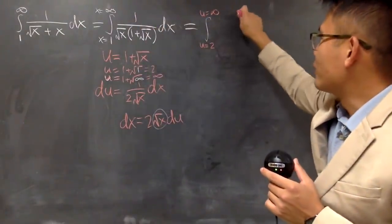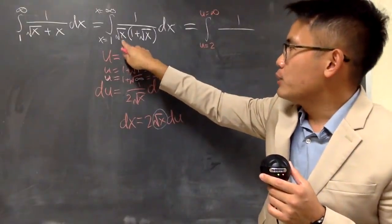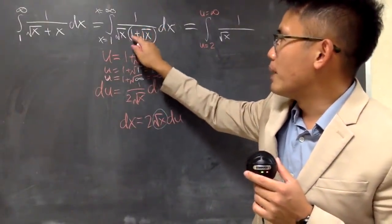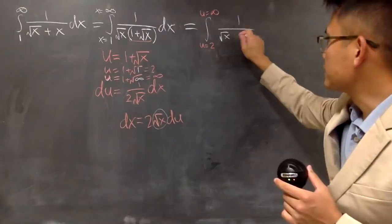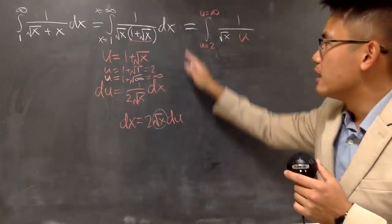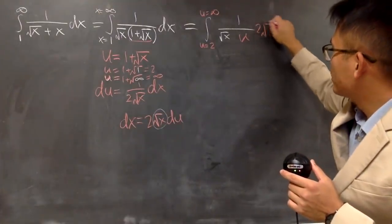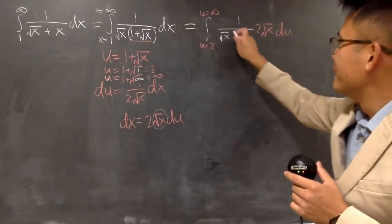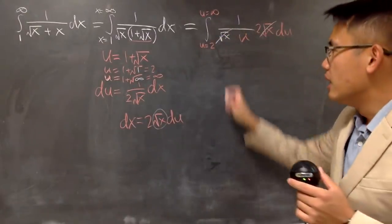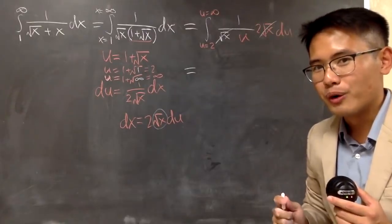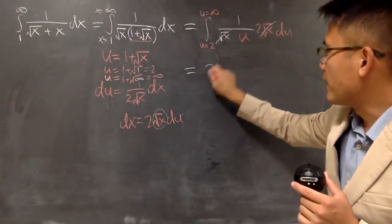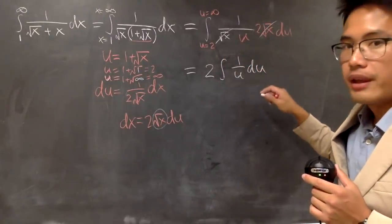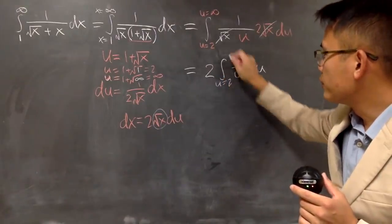And I will just write this down. We have 1 over, I will just keep it as square root of x, because things are going to cancel nicely. And this right here, 1 plus square root of x, it's exactly my u. So, let's multiply by u, and the dx is 2 square root of x du. And as you can see, this and that cancel each other nicely. And as I said, I will finish everything in the u world. So, this 2, I will take it to the front, and then we have the integral. This is just 1 over u du. And in the u world, u goes from 2 to infinity.